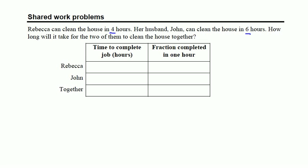Now the first thing that might come to our minds is that the average of four and six is five, and we can certainly rule that answer out pretty quickly because it doesn't make sense for them to take more time cleaning the house together than it would take Rebecca to clean the house working alone.